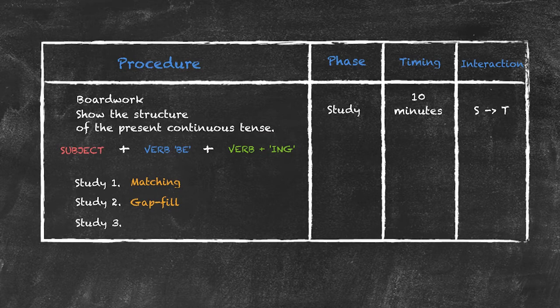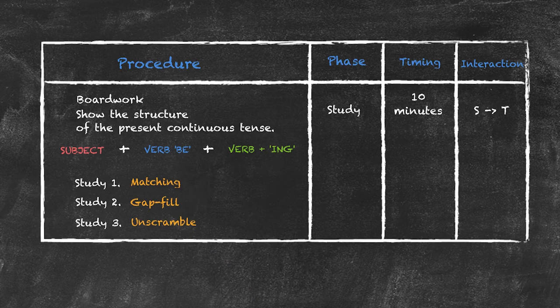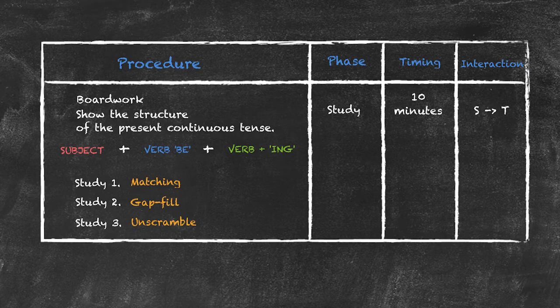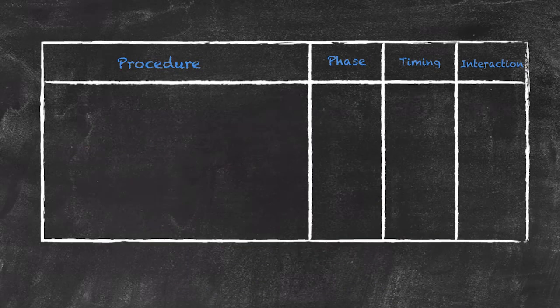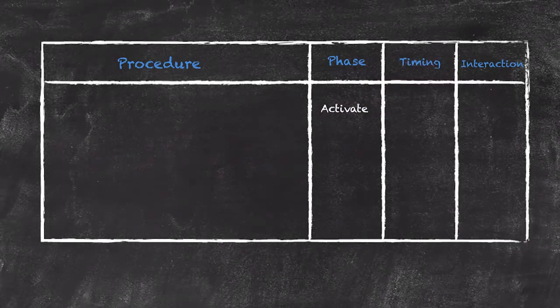So that I can check that any spelling changes that take place are correct. And the final one is going to be an unscramble where each of the sentences themselves are put into the wrong order and they have to recreate the correct order following this particular structure. So the activate activity is going to try to get the students to use this particular present continuous tense in a realistic setting.